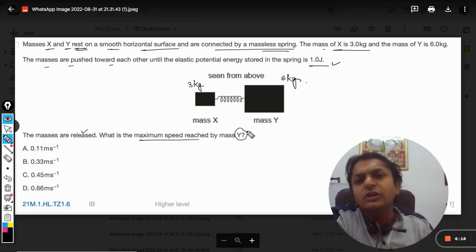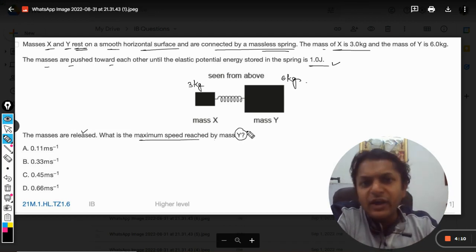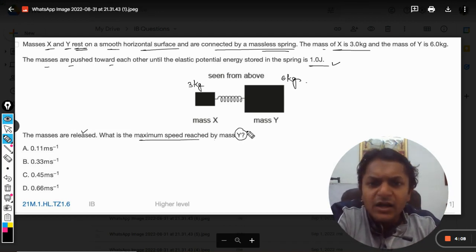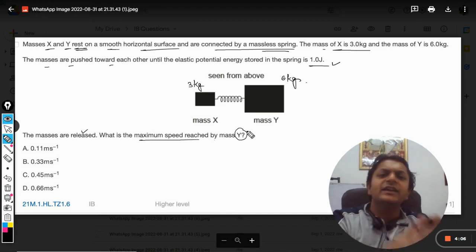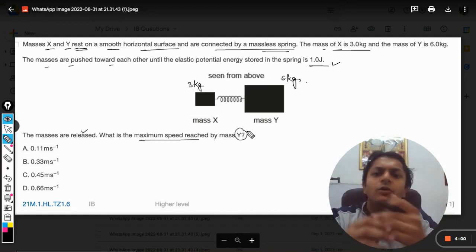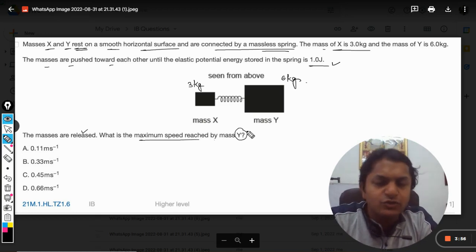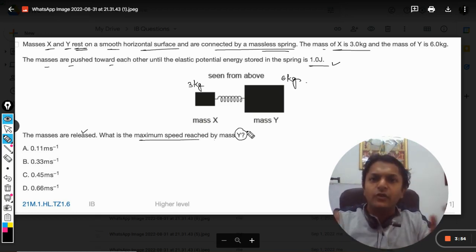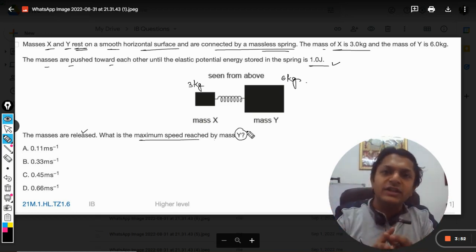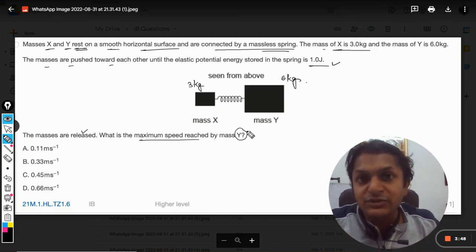So they're talking about mass Y. What is the maximum speed? Okay, fine. When they are compressed, the elastic potential energy stored is 1 joule. Now when we release these two masses, they will start moving away from each other as if there was an explosion. These kinds of problems come under the topic of explosion.